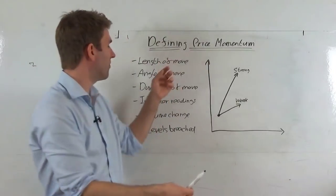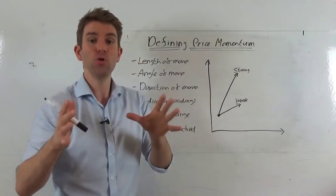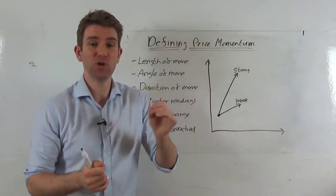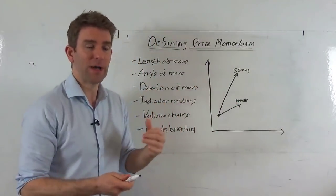That is showing you that there's a lot of participants involved in it. Combine that with the angle of the move, the length of the move, the duration of the move, however you want to frame that, and volume. You know this thing is decent momentum and you can trade accordingly. You can position accordingly. You can look for the strategy that fits into that the best possible way.